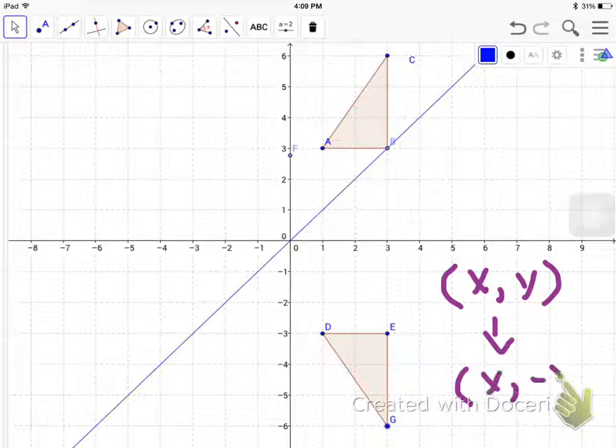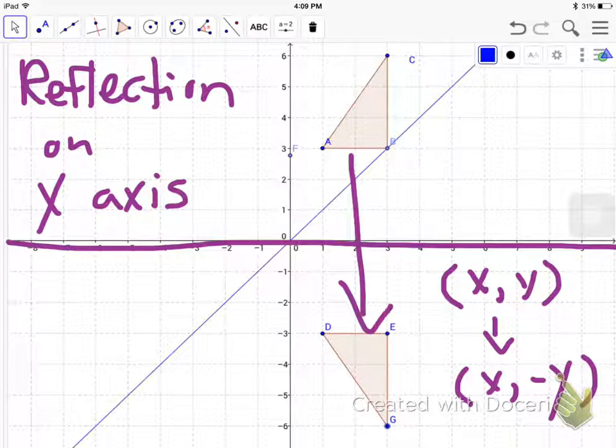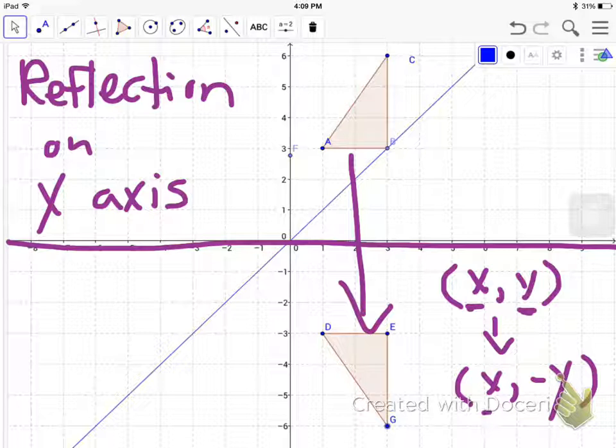First of all, let's look at a reflection on the x-axis, which is that line there. Now, when you're reflecting across the x-axis, you're changing the coordinates of your original image. (x, y) changes to: the x value remains the same, and the y value is flipped, becomes negative.